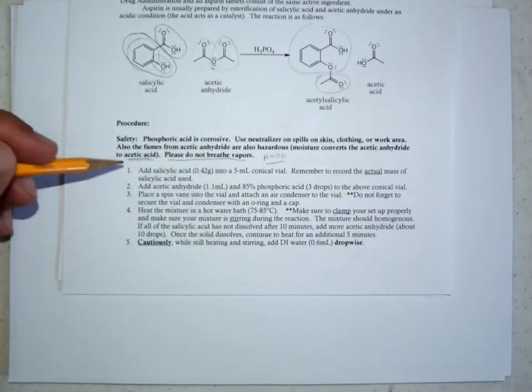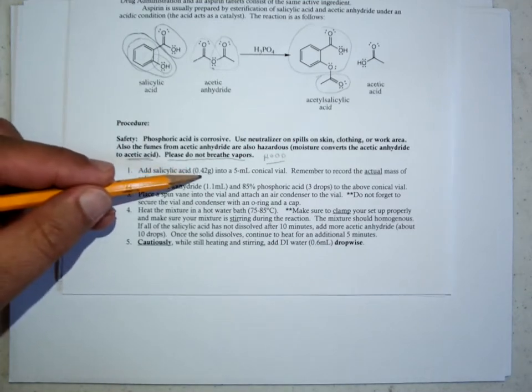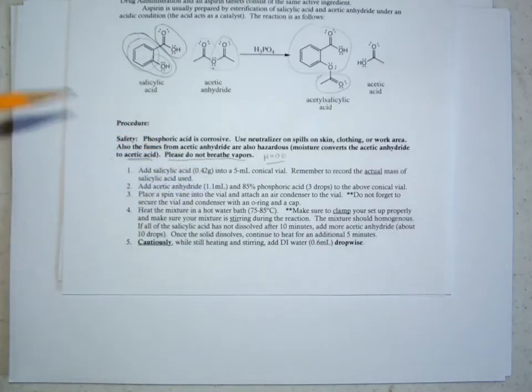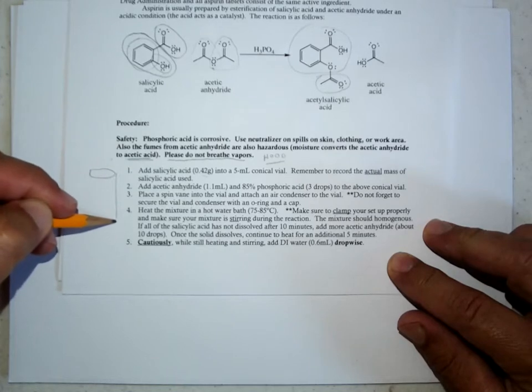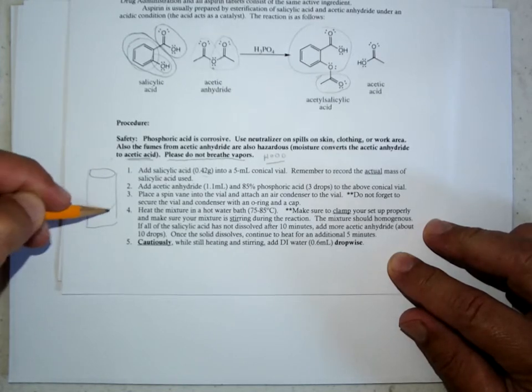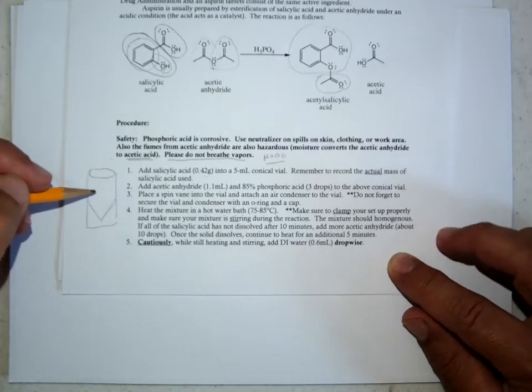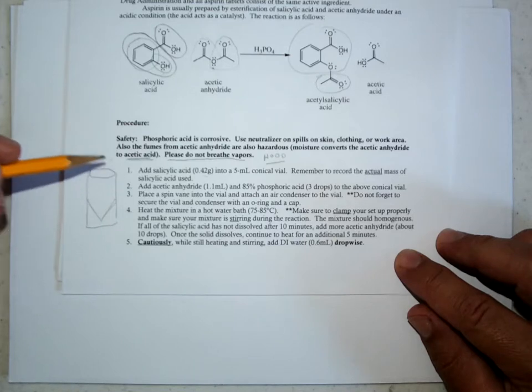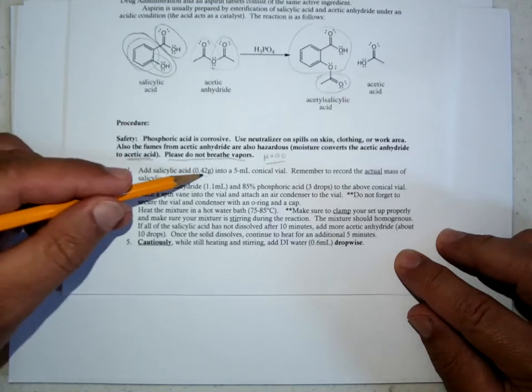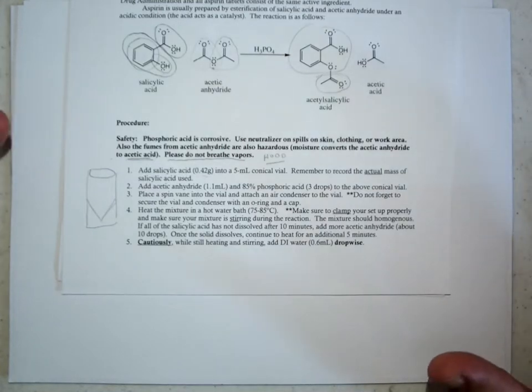All right, so basically we would take solid salicylic acid, and this is a very small scale reaction. We'd put 0.42 grams in a 5 milliliter conical vial. Conical vial is a very small piece of glassware. So sort of a vial, but with a cone shape at the bottom, hence the name conical vial. And this would be the workspace for the experiment. We get the actual mass. Our analytical balances go to four digits past the decimal, so you shouldn't just have 0.42 grams in your report. And it could be a different amount, 0.4316 grams, whatever.